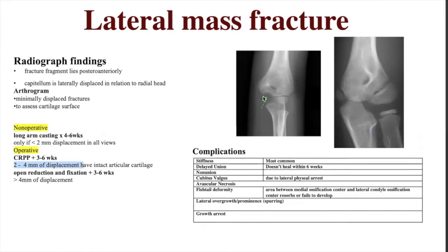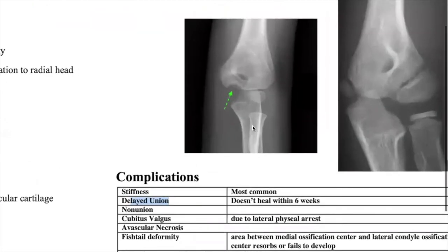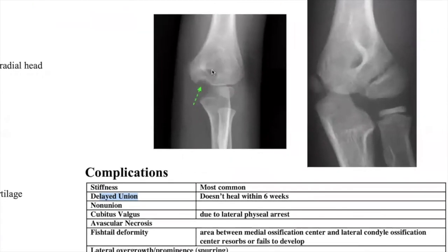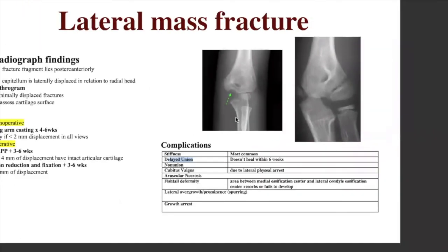Complications of lateral condyle fractures are more common than those of supracondylar fractures. Patients are predisposed to stiffness, delayed union, non-union, cubitus valgus, avascular necrosis, and fishtail deformity — an area between the medial and lateral condylar ossification centers that fails to develop, along with lateral overgrowth or spurring.